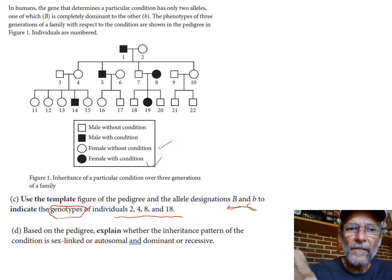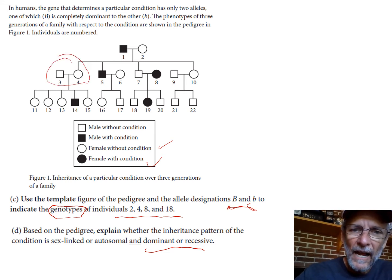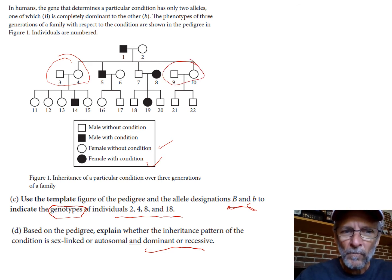So now you got to figure out individuals 2, 4, 8, and 18. They told you that B is completely dominant to little b. They didn't tell you whether this was dominant or recessive, but you can figure this out. Remember what we said - you always look for do you have two parents that have the same trait? Two sets of parents have the same trait, that they don't have the condition. Once you locate those parents, do they have any kids that have the other trait?